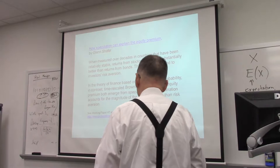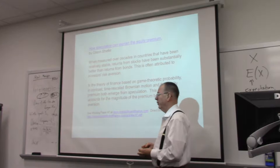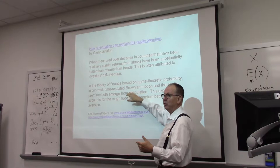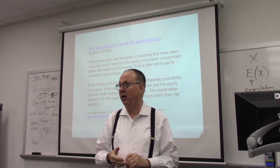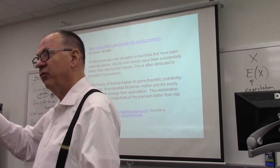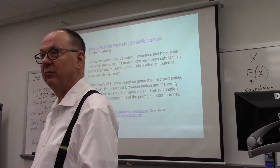I focus on the equity premium because it's something very concrete. But from a theoretical point of view, there's something bigger going on: game-theoretic probability can not only explain the equity premium, but it can explain why stock prices look like Brownian motion. Does anybody know other explanations for why stock prices look like Brownian motion or geometric Brownian motion?